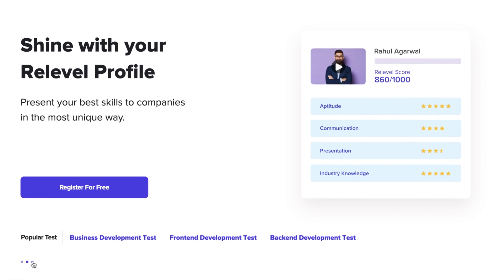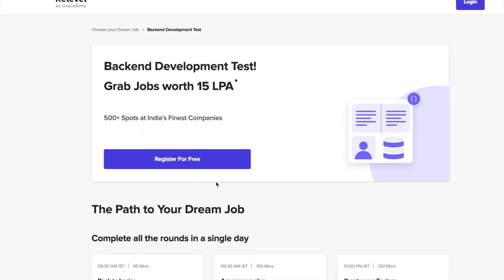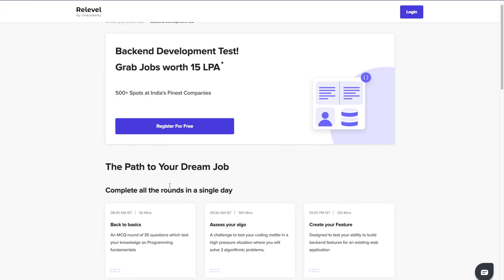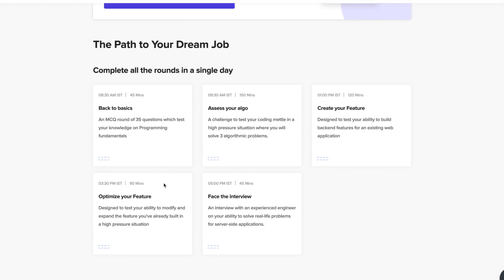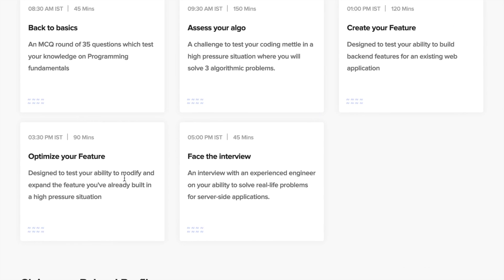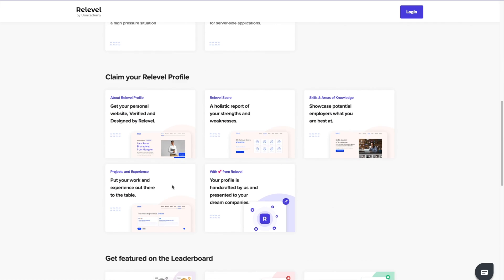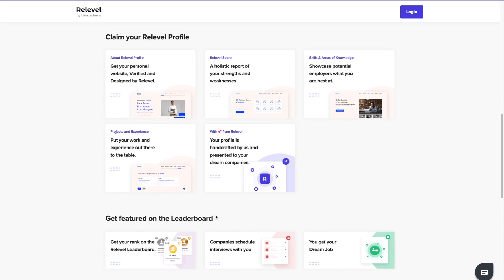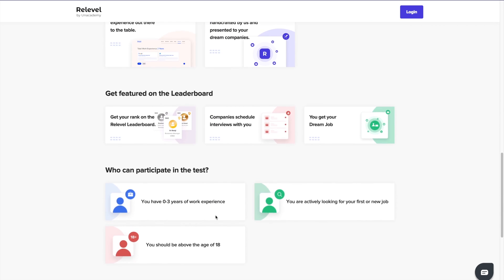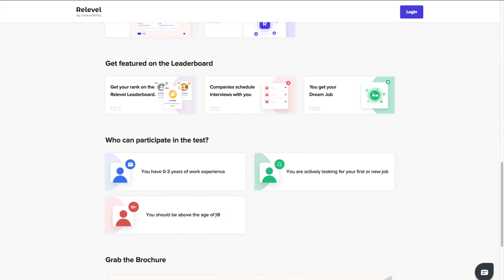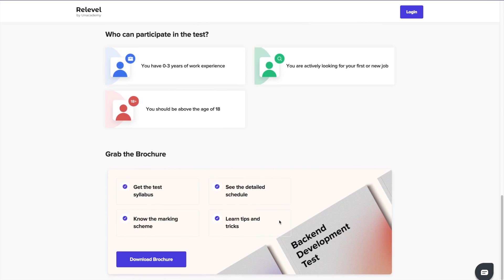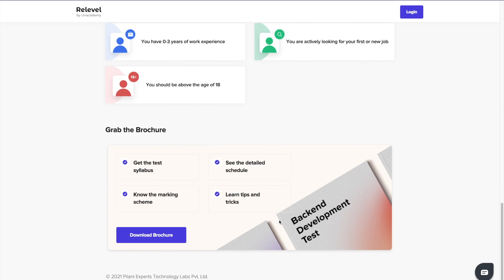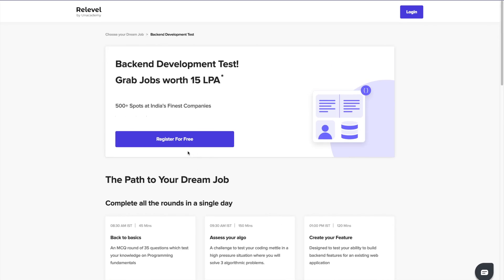Do you wish to work with companies like CRED, UPGRAD, Urban Company, Razorpay, but you're not able to apply because of your lack of experience and lack of opportunities? Here's the solution. Relable by Unacademy is a hiring platform that helps freshers and experienced people get jobs in India's top companies. All you need is skills. You just need to give the Relable test that is completely based on your skills. Depending on your performance, your interview will be scheduled and you will be hired from the Relable platform. And the best thing is, it's absolutely free. Please make sure you check out the links in the description.